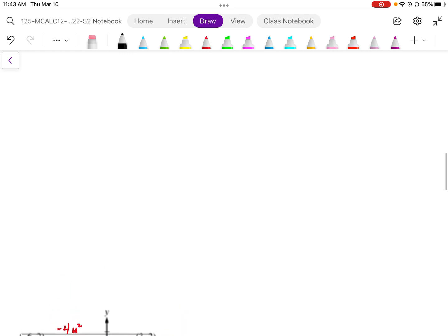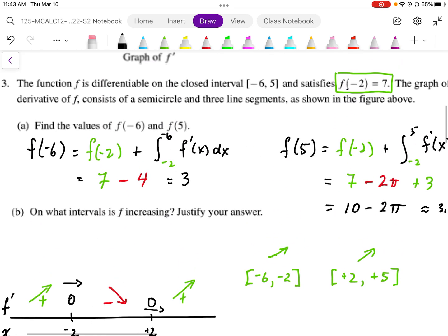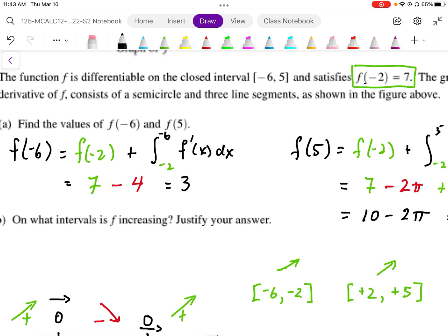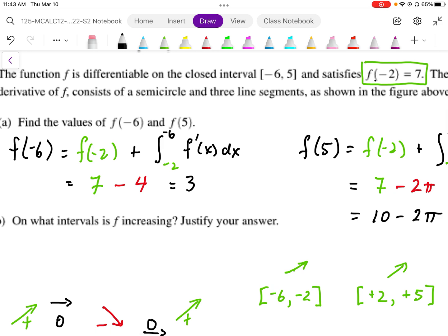In fact, we can just plug in those values. We calculated this here, and I made a mistake in Part A. It should be 7 minus 4, which is 3. So F of negative 6 is equal to 3.